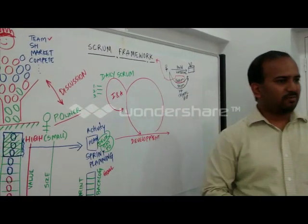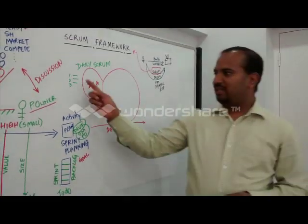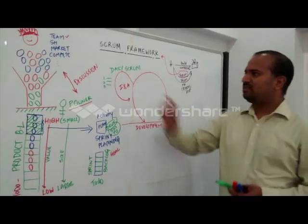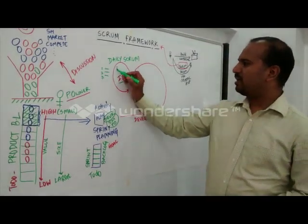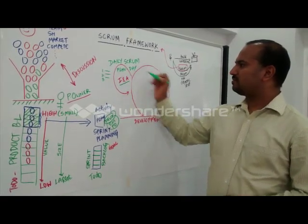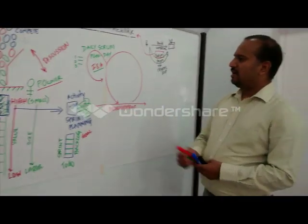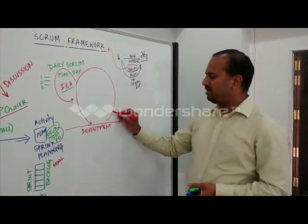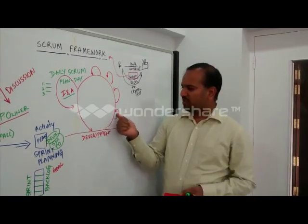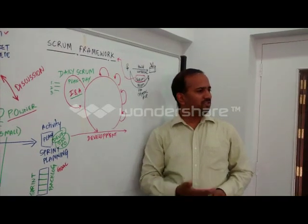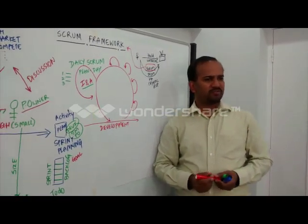Daily scrum is a short activity where team members stand together in the form of a daily stand-up and discuss these questions. At the end of the daily scrum, they do an inspect and adapt and plan for what they need to do for today. The chances that you will fail are less, or you will know well in advance that you are not able to reach your goal. That's the whole purpose of being in Scrum.